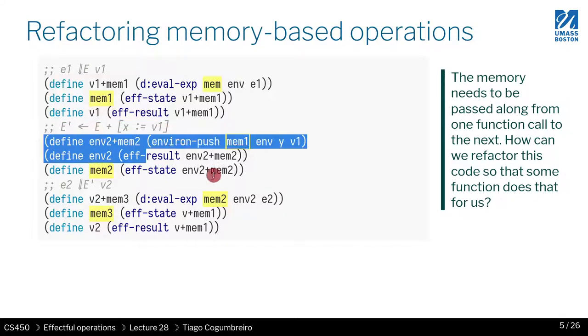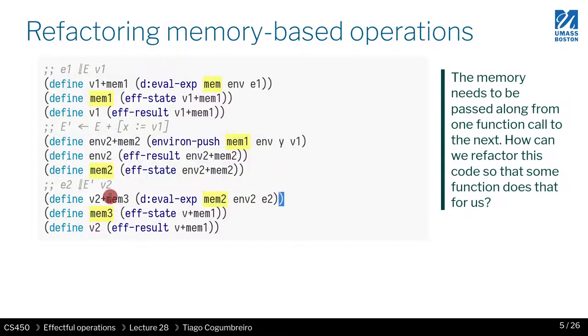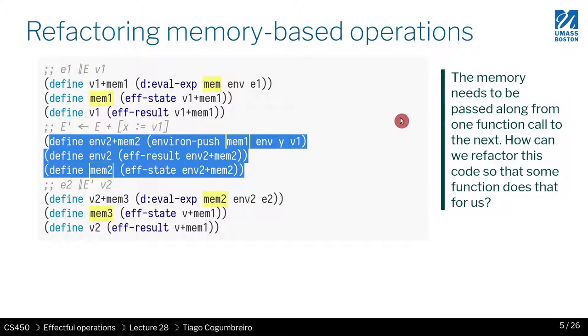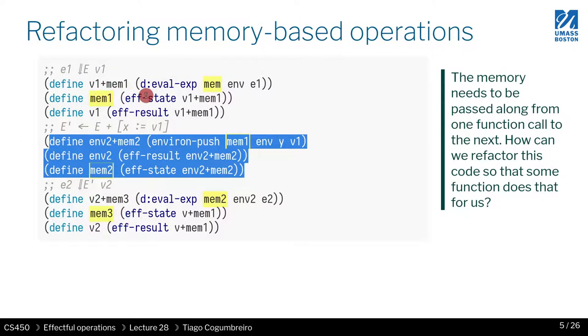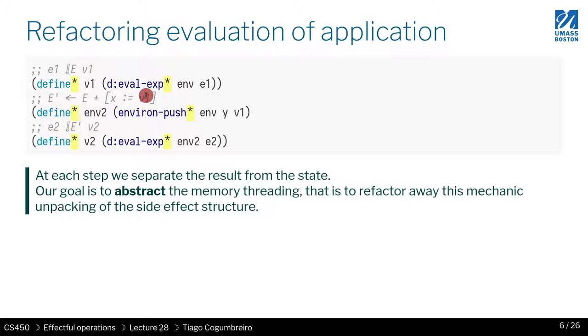So wouldn't it be nice to abstract away the code that is redundant, that is repetitive, and magically transform it into this one? This is not real code, it's just pseudocode to give you an objective of what we would like to see. I put a little star whenever we have this idea of mutable operations.